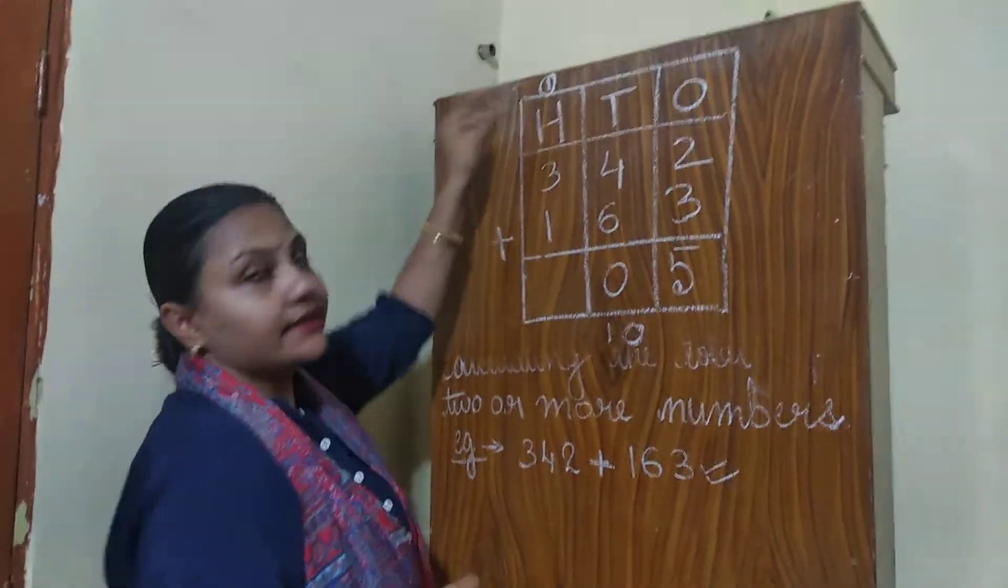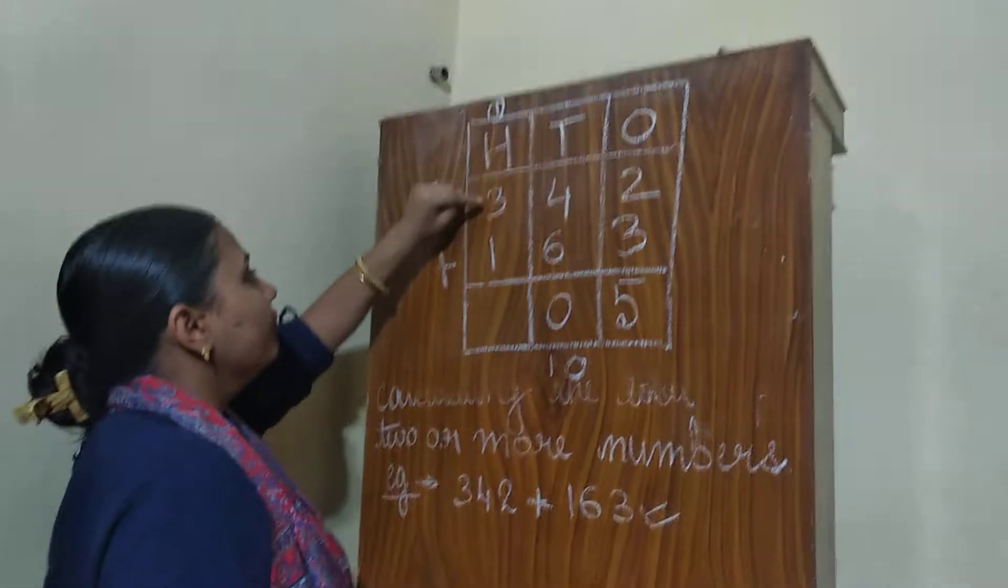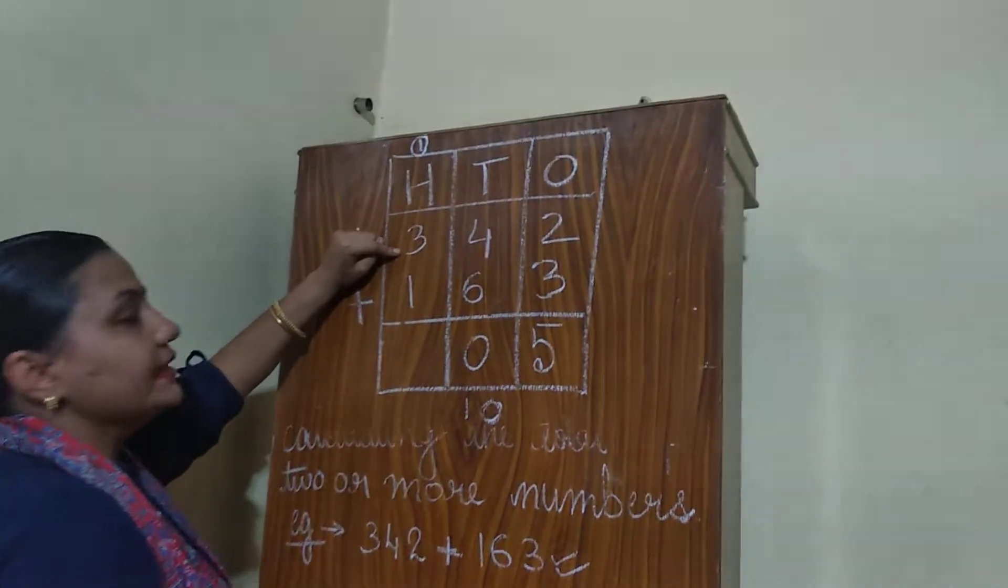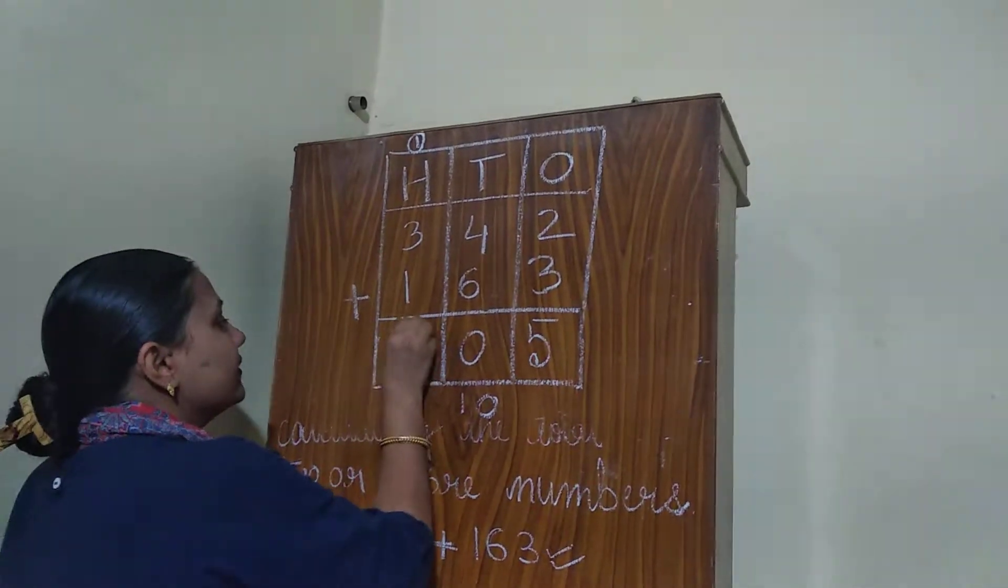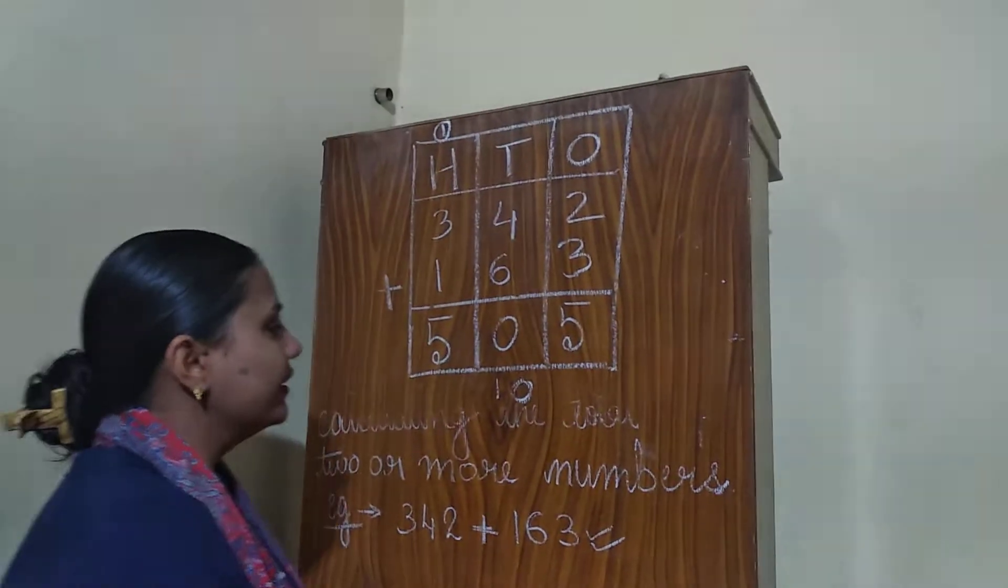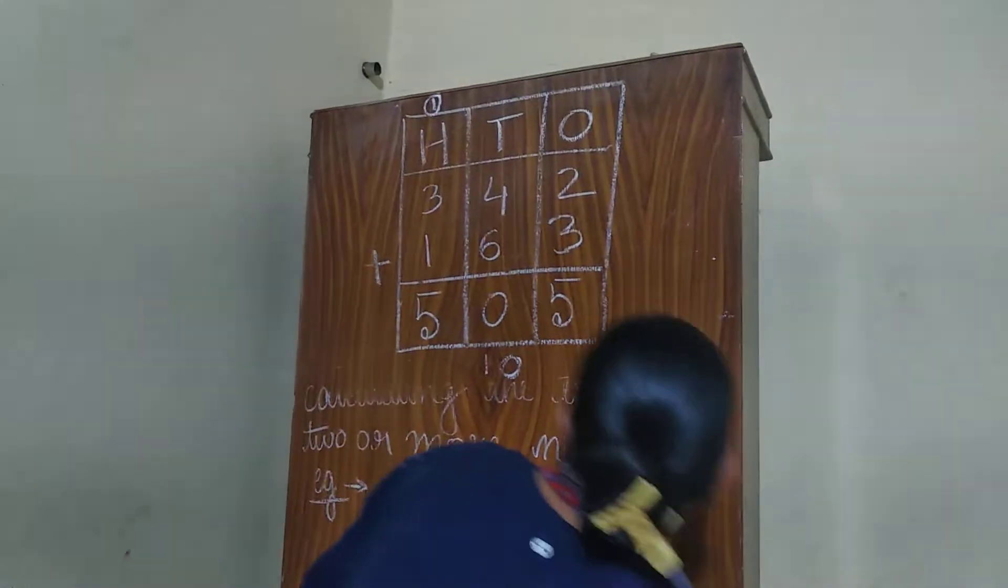that is 100's place as carry. Now, 1 plus 3, that is 4 plus 1, that is 5. So 505 is the answer.